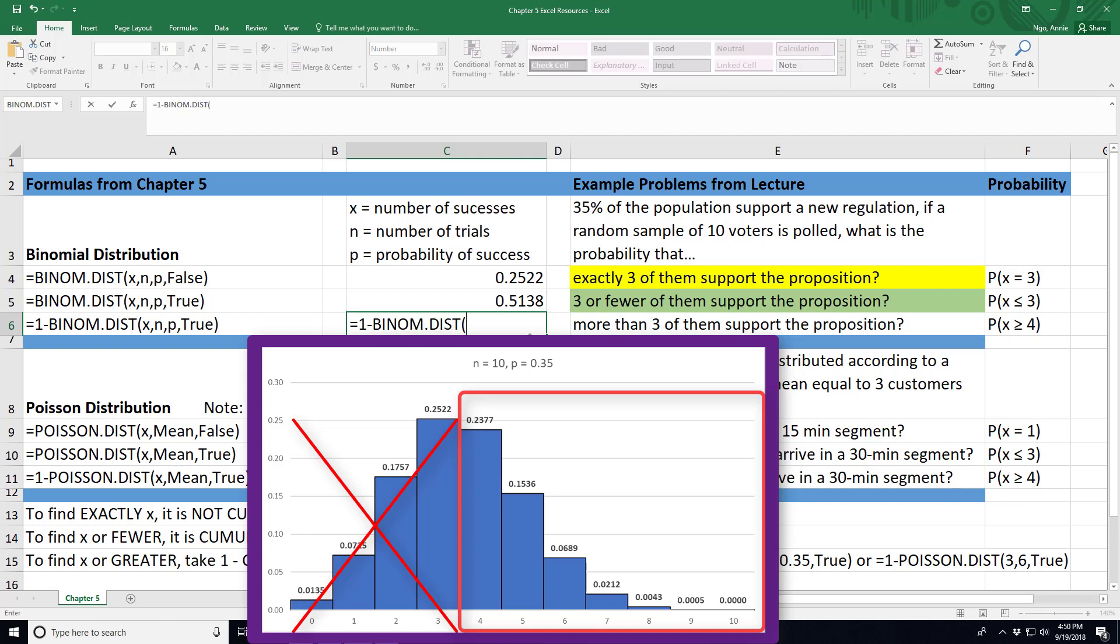So that's why we type in 1 because all of my probabilities combined equal to 1 minus the binomial distribution. In this case, I'm going to subtract 3 or fewer that support the proposition.